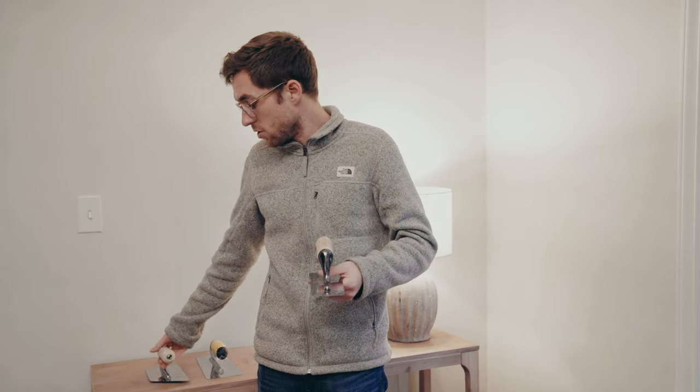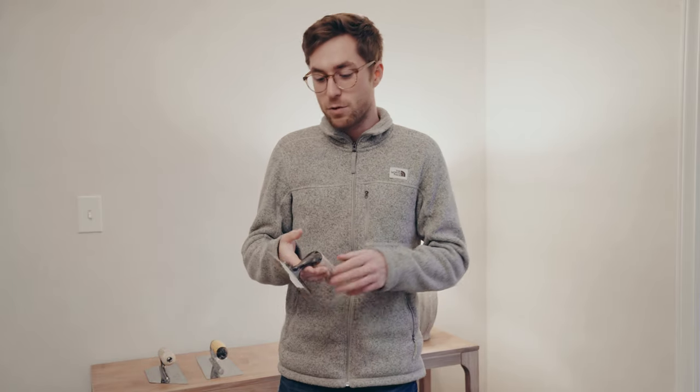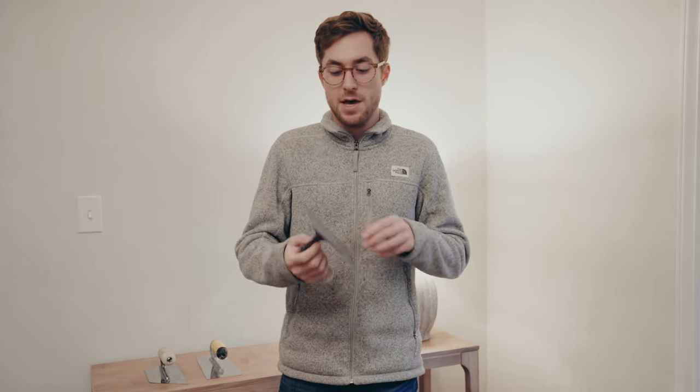I recommend having two trowels, because when you go to apply the plaster, you're going to want to stop every little bit to burnish on the second coat. It's good to have a second trowel that's already cleaned off and ready to go, so you're not applying, then having to clean it off, then burnish, then clean that off, then apply again. So just having two separate trowels that you can keep ready to go is the way to do it.